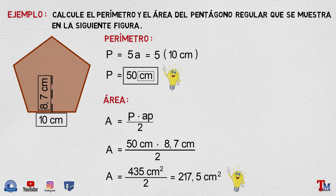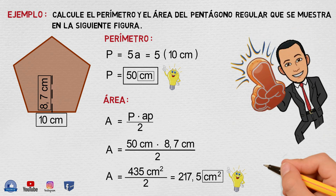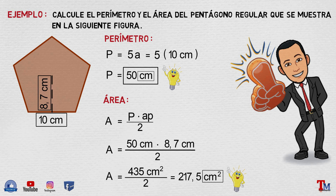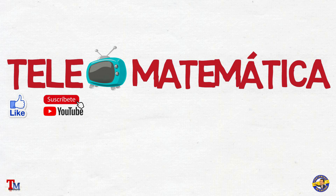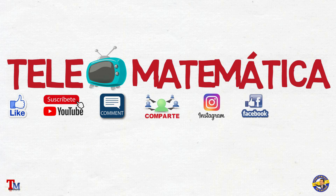Recordad que la unidad de medida del área es cuadrática, elevado a la 2. Espero que hayas comprendido el tema. Y hasta aquí nuestro video sobre perímetro y área de un polígono regular. Espero que el video te haya ayudado. Si te gustó el video, te invito a que le des un like, a que te suscribas si no lo has hecho aún, y actives las notificaciones para que puedas ver los nuevos temas que estrenaremos. Que nos dejes tus comentarios, que lo compartas con tus amigos y que nos sigas en nuestras redes sociales. ¡Hasta el próximo video! ¡Gracias!